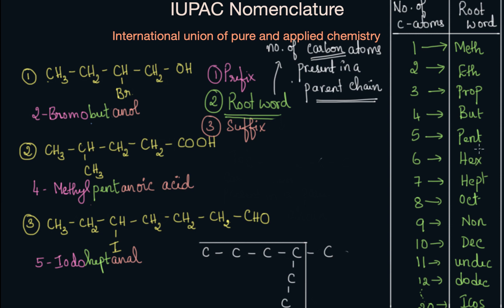You might have come across the terms pent and hex before — for example, pentagon and hexagon. Pentagon means a structure with five sides, and hexagon has six sides. So you can directly relate pent and hex to those sides. Similarly, here instead of sides, we represent it in terms of carbon atoms. So if it is pent, that means the compound has five carbons. This is how scientists gave the root words.